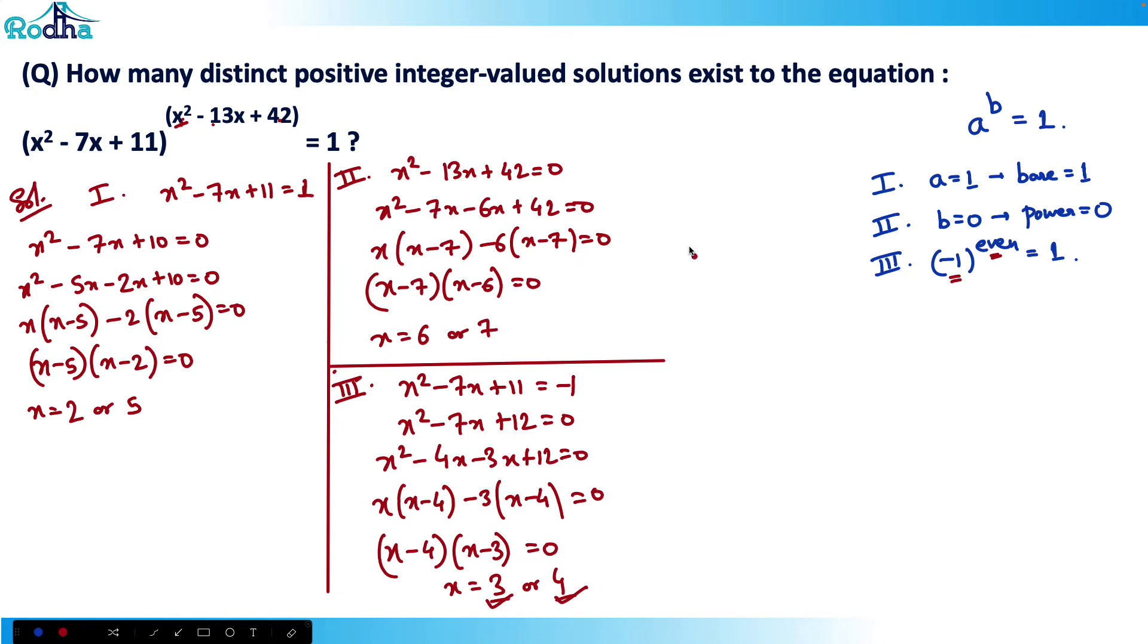So I got 6 values: x equals 2, 5, 6, 7, 3, and 4. The answer is 6 values. Very good question, very conceptual. We already did this in class, so many students just saw this question and marked 6 as the answer. Thank you guys, see you in the next video.